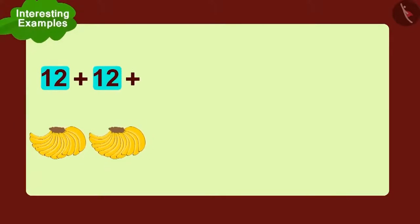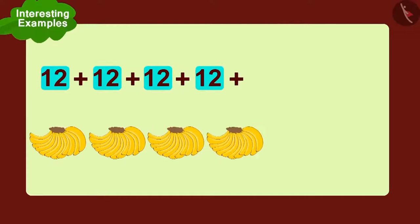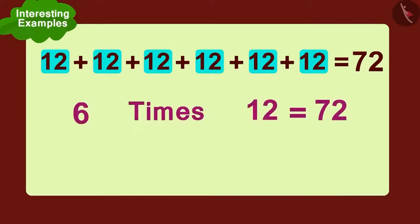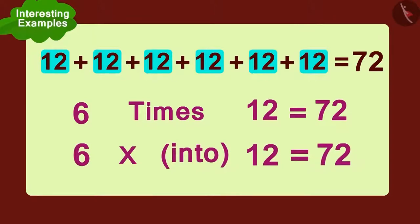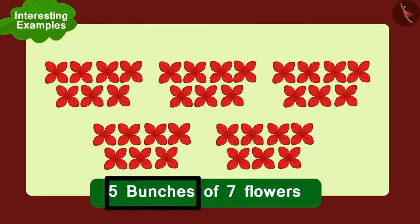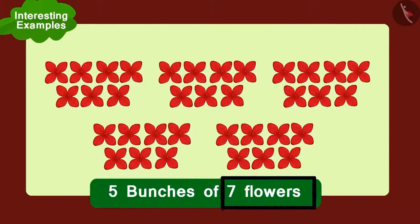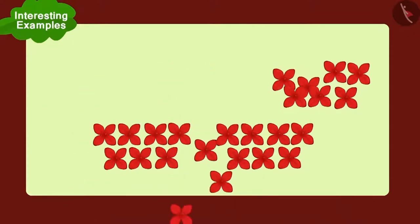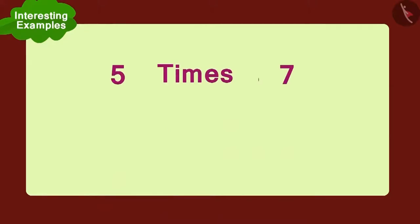Twelve added to twelve, again add twelve, again add twelve, again add twelve. And finally add one more twelve. How much is that? Seventy-two. Can you write this in another way? Six times twelve or six multiplied with twelve. We can write it like this.